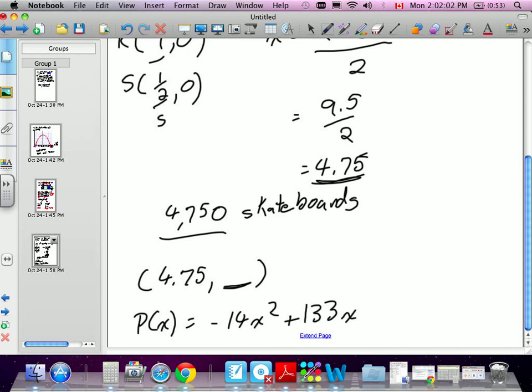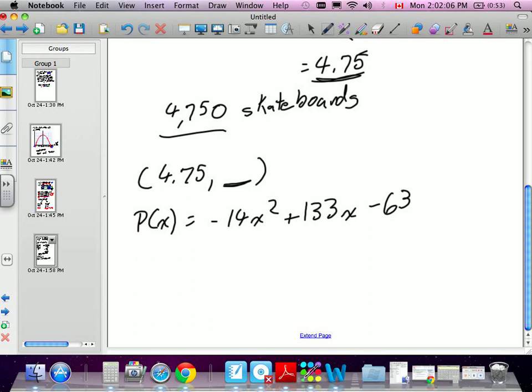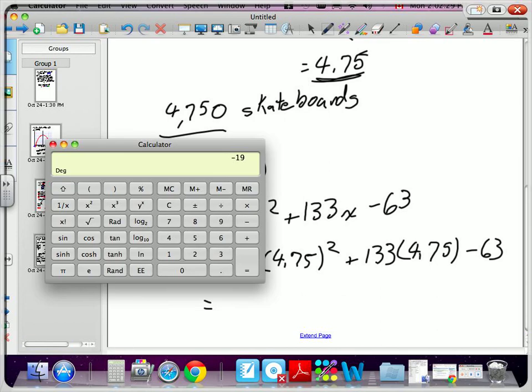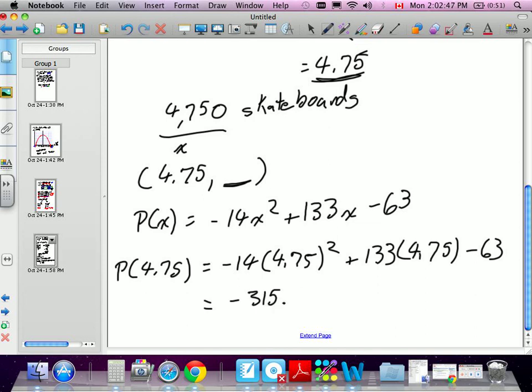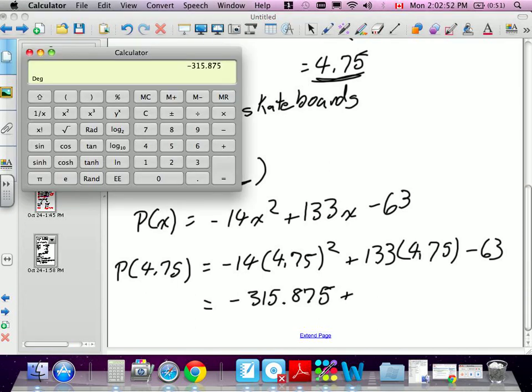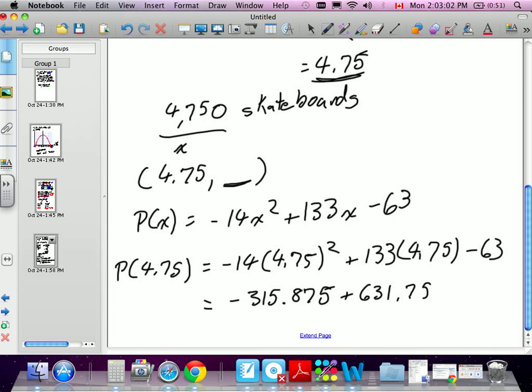So this is our x-value, 4.75. So the profit is asking us, at 4.75, how much profit will they make? So we are going to plug in 4.75 for both of the x-values, and we're going to solve. 4.75 squared times negative 14 is negative 315.875, plus 133 times 4.75 is 631.75, minus 63. So what I did there is I did all of the operations here and all of these operations to get those numbers.